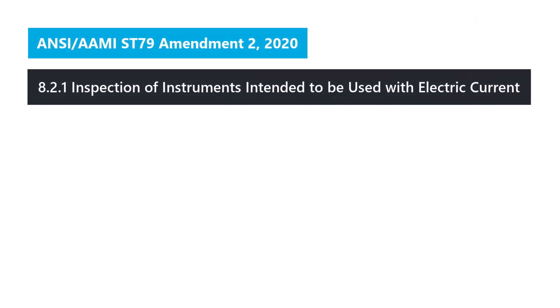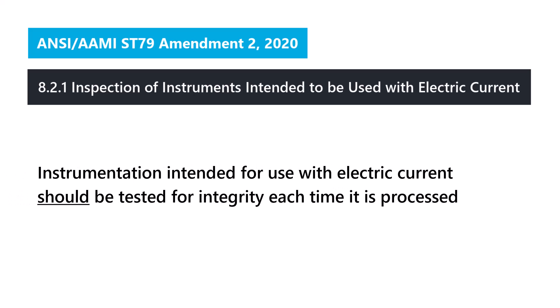Under the new Amendment 2, 8.2.1, under inspection of instruments intended to be used with electric current, it states that instrumentation intended for use with electric current should be tested for integrity each time it is processed.